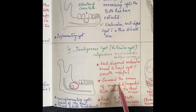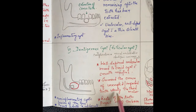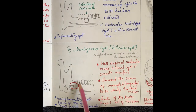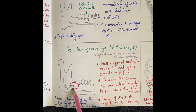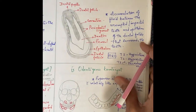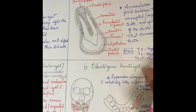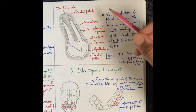The dentigerous cyst surrounds the crown of the unerupted or impacted tooth, usually the third molar. An important point: the roots of the tooth project outside the lesion, because the cyst surrounds only the crown. The root will be outside the lesion.